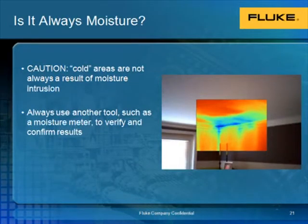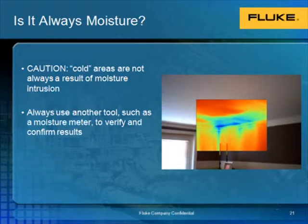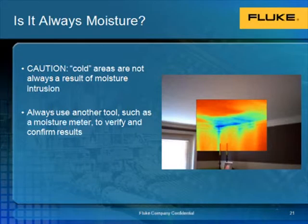Since moisture has been the focus of the past few slides, I'd like to caution everyone that areas showing up cold on a thermal imager are not always the result of moisture intrusion. As you see in this picture, we're actually looking at an insulation gap. It also shows up cold, but that is because the outside temperature is so much colder than the inside temperature. It's always a good idea to utilize another tool such as a moisture meter to verify and confirm your findings.